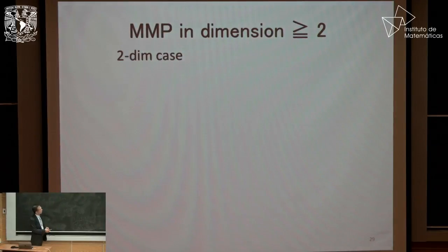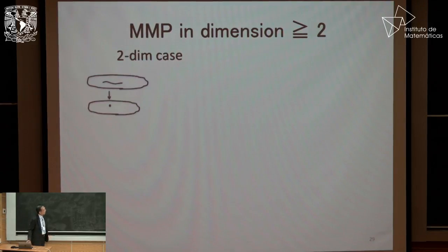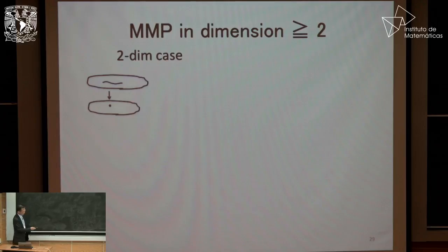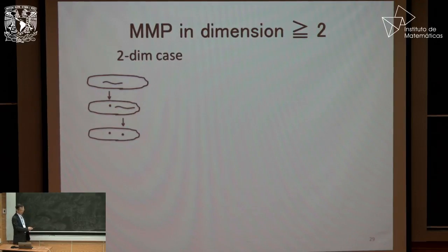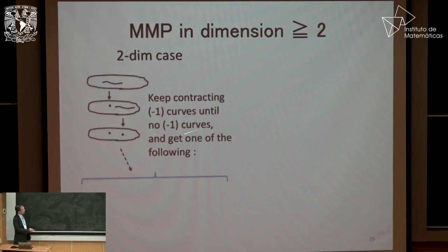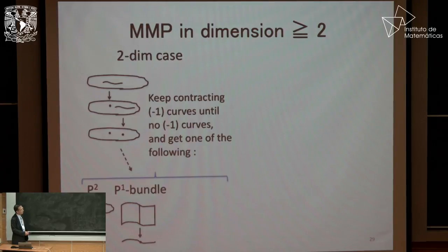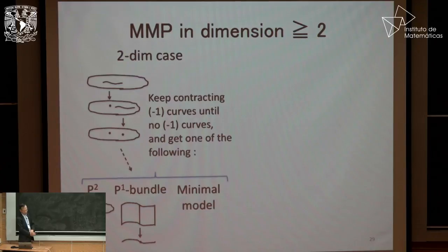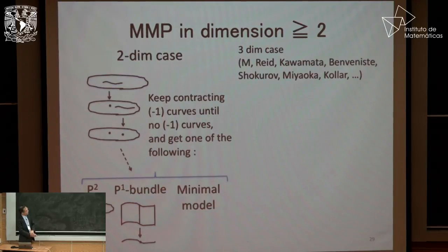So let's review. In dimension two: if I have a minus-one curve I contract it, and if I have another minus-one curve I contract it, and I keep doing it. If there is no more minus-one curve, I have either P2, a P1-bundle, or an Enriques model. In the dimension three case...